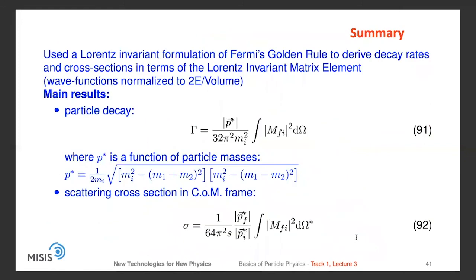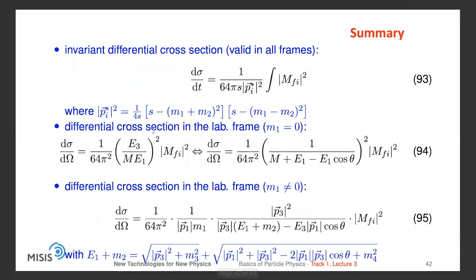In summary, we used the Lorentz-invariant formulation of Fermi's golden rule to derive decay rates and cross-sections in terms of the Lorentz-invariant matrix element, with wave functions normalized to 2E per volume. The main results obtained are: the particle decay rate, the scattering cross-section in the center-of-mass frame, the invariant differential cross-section valid in all frames, the differential cross-section in the lab frame for a massless particle, and the same for a massive particle. In the next lectures we'll see how to calculate the one missing part in all these formulas — the matrix element, which depends on the process by which the interaction happens.